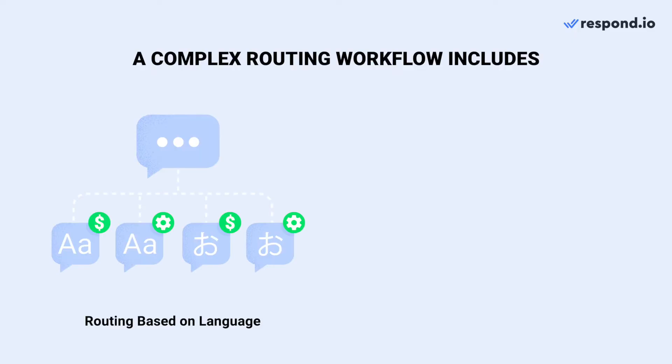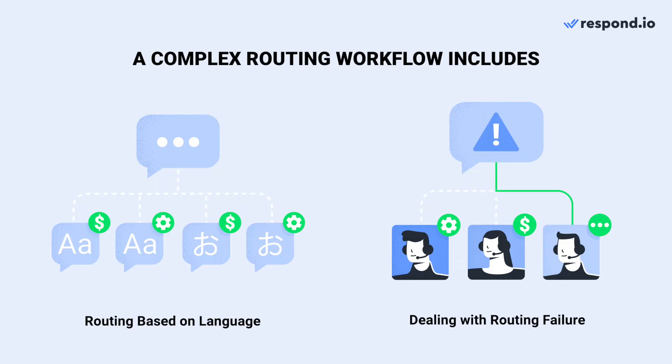Branches can be extremely powerful when used with multiple conditions. This is known as complex routing. We have an example, and this includes creating a complex routing workflow using a language-based routing strategy. Additionally, we'll be showing steps you can add to the workflow to prevent losing conversations when routing fails.